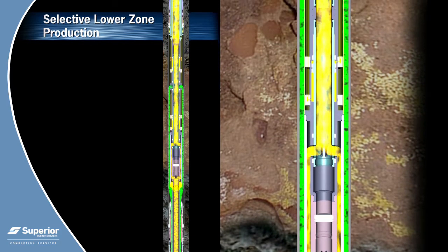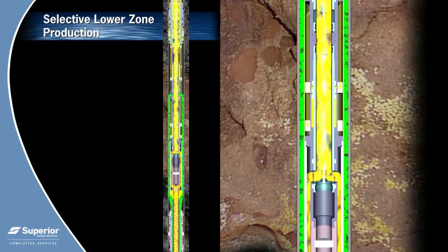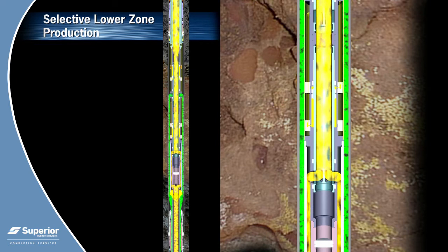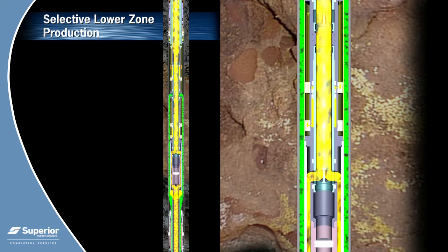Flow continues up through the shroud and into the lower hydraulic multi-service valve. Production is always shut in or isolated at the tree prior to shifting any downhole hydraulic sleeve.